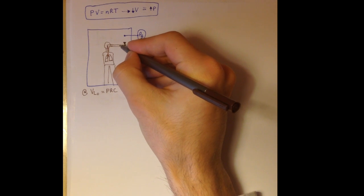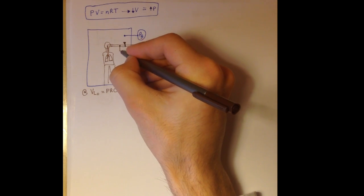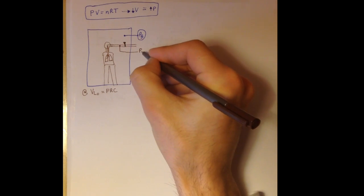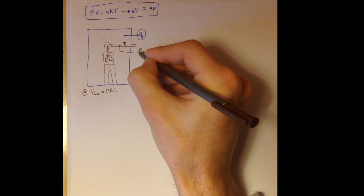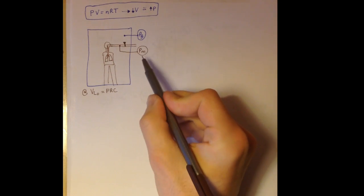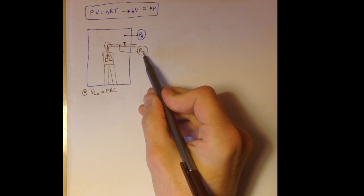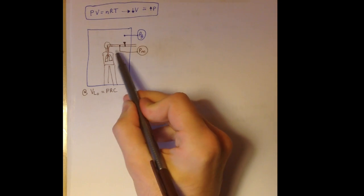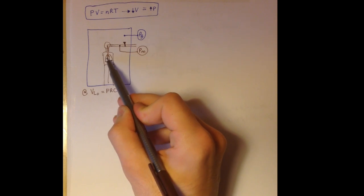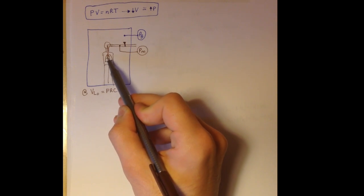There is a second pressure probe which measures the pressure inside the mouth. The reason why we measure the pressure inside the mouth is because this pressure inside the mouth is indicative of the pressure inside the lungs.